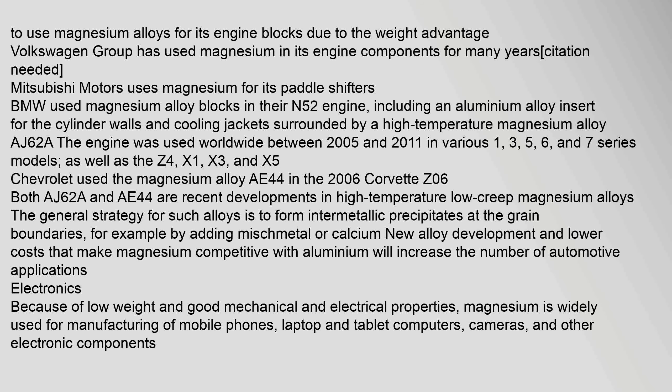Volkswagen Group has used magnesium in its engine components for many years. Mitsubishi Motors uses magnesium for its paddle shifters. BMW used magnesium alloy blocks in their N52 engine, including an aluminium alloy insert for the cylinder walls and cooling jackets surrounded by a high-temperature magnesium alloy AJ62A. The engine was used worldwide between 2005 and 2011 in various BMW 1, 3, 5, 6, and 7 series models, as well as the Z4, X1, X3, and X5. Chevrolet used the magnesium alloy AE44 in the 2006 Corvette Z06.